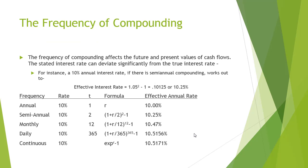The frequency of compounding affects the future and present values of cash flows. The stated interest rate can deviate significantly from the true interest rate. For instance, a 10% annual interest rate, if there is semi-annual compounding, works out to 10.25% as calculated in the slide. Similarly, the effective annual rate can be calculated at different frequencies of return by using the given range of formulas.